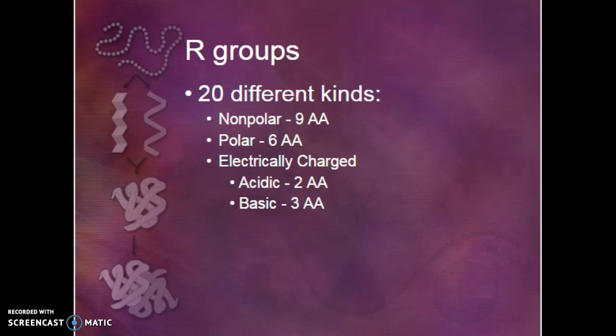There are 20 different kinds of side chains. Notice we've got 9 nonpolar, 6 polar. We've got 2 acidic and 3 basic side chains. Those are our amino acids. They're going to interact differently. If they're polar, if they're nonpolar, they're going to have similar characteristics.